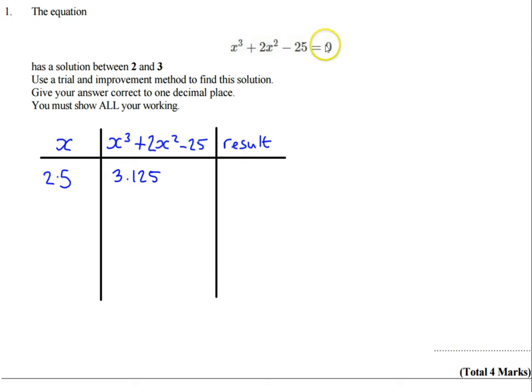Now we're looking for a solution that's going to be equal to zero, so this is obviously going to be too high, which means my next number I'm going to try must be lower than 2.5.